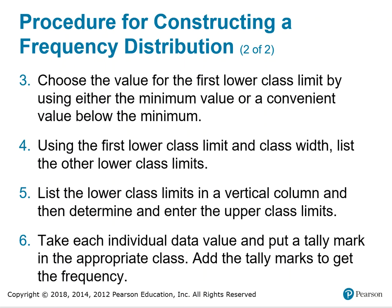Choose the value for the first lower class limit by using either the minimum value or a convenient value below the minimum. Using the first lower class limit and class width, list the other lower class limits. List the lower class limits in a vertical column and then determine and enter the upper class limits. Finally, take each individual data value, put a tally mark in the appropriate class, and add the tally marks to get the frequency.